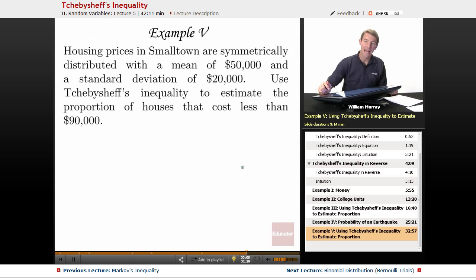In example five, we're looking at housing prices in small-town USA, and apparently they are symmetrically distributed with a mean of $50,000 and a standard deviation of $20,000. And we're going to use Chebyshev's inequality to estimate what proportion of the houses cost less than $90,000.